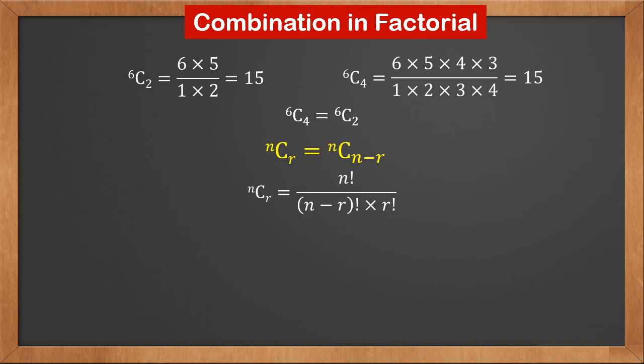Now let's prove it. We know nCr is n factorial over n minus r factorial times r factorial. nC(n minus r) is n factorial over n minus (n minus r) factorial times (n minus r) factorial. This is n factorial over r factorial times n minus r factorial. It is equal to nCr. So we proved it.